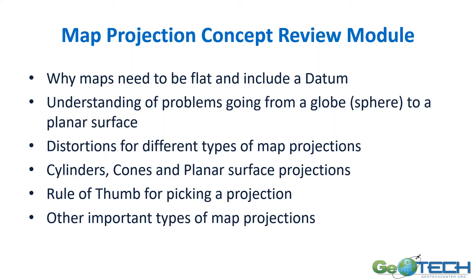This concept module will look at why we need a map to be flat and include a datum. We'll also look at problems that occur when going from a globe or sphere to a planar or flat surface. We'll look at distortions for different types of map projections, and how some projections use cylinders, cones, and planar surfaces. We'll also look at an important rule of thumb for picking a map projection, and review other types of map projections.